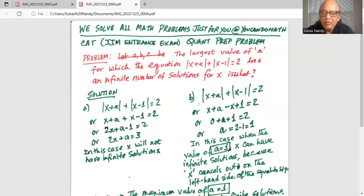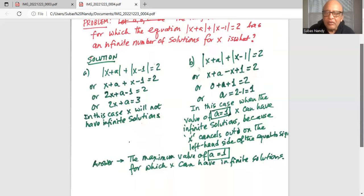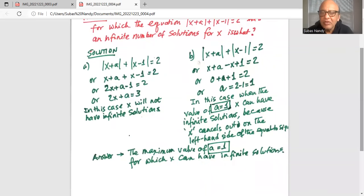In this case, when the value of a equals 1, x can have infinite solutions. This is because x cancels out on the left-hand side of the equation. So the answer is: the maximum value of a is equal to 1 for which x can have infinite solutions.